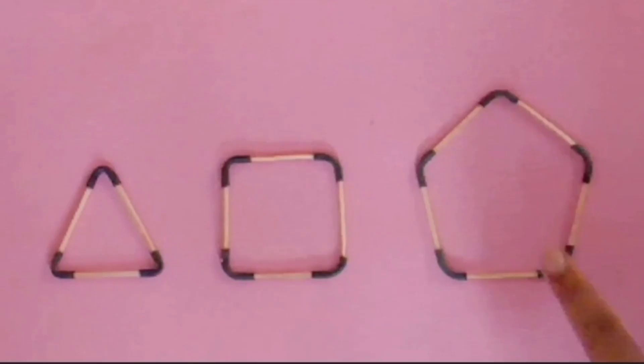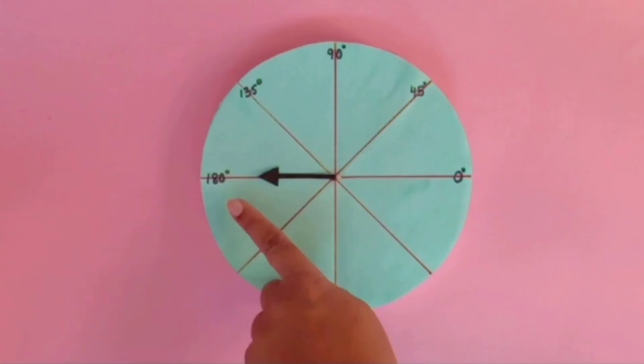So students, today we have learned that when figures are changed, then angles are also changed. And also we have learned how to make our degree clock.